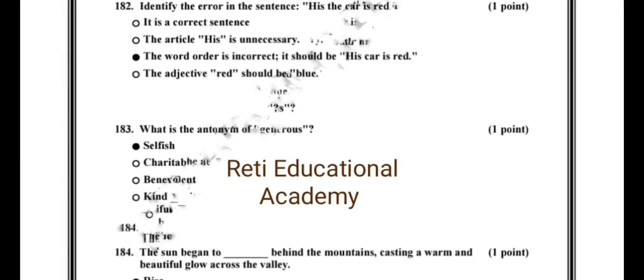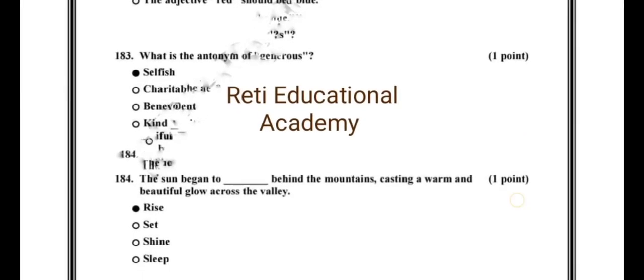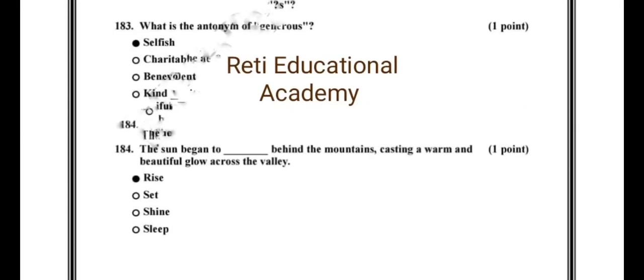Question No. 183. What is the antonym of generous? The correct option is: selfish. Question No. 184. The sun began to blank behind the mountains, causing a warm and beautiful glow across the valley. The correct option is: rise.